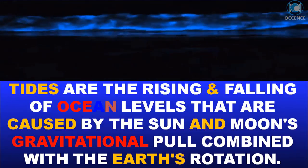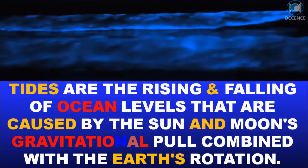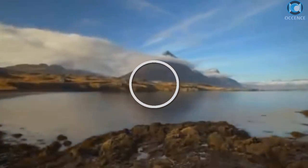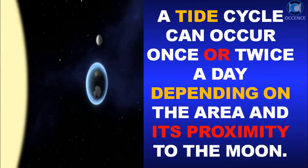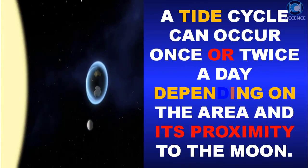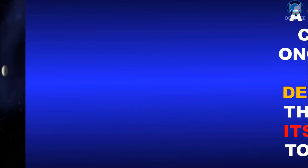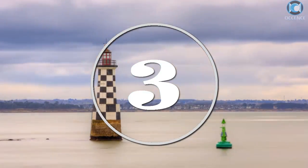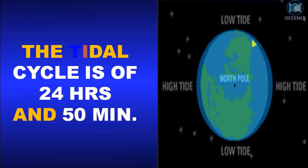Tides are the rising and falling of ocean levels, caused by the Sun and Moon's gravitational pull combined with the Earth's rotation. A tide cycle can occur once or twice a day, depending on the area and its proximity to the Moon. A tidal cycle is 24 hours and 50 minutes.